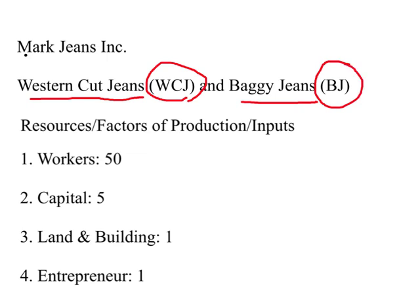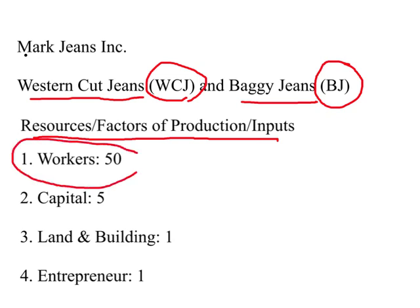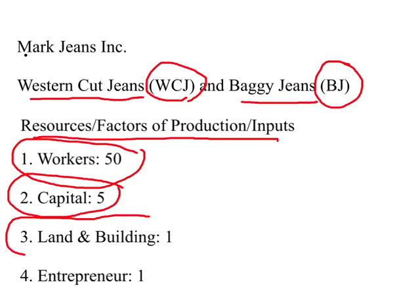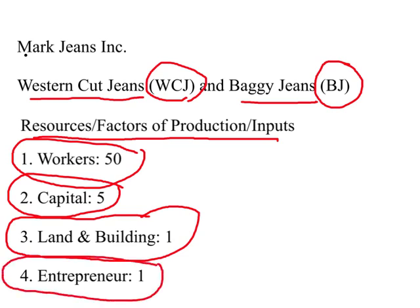Mark Jeans Incorporated produces two types of jeans, and in order to produce them it requires resources — factors of production, or inputs. Suppose this firm employs 50 workers and uses five machines. All these workers work on machines placed in a building on a plot of land, which we assume is one unit. The fourth factor of production is the entrepreneur, and that is just one person — Mark himself.